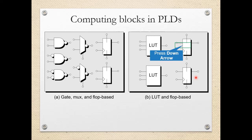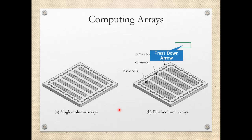What are the different computing blocks in PLDs? There are two approaches: one uses gates, multiplexers, and flip-flops; another uses lookup tables and flip-flops. FPGA devices generally have blocks consisting of lookup tables and flip-flops. In one chip, there may be a number of arrays of these programmable devices arranged in single or double column arrays. Spaces between columns serve as channels for interconnection, and the outer periphery has the different IO pins of the chip.